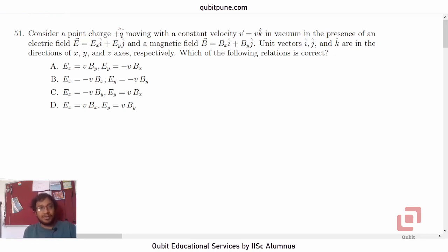Consider a point charge positive Q moving with a constant velocity v̄ = vk̂ in vacuum, in the presence of an electric field Ē = ExÎ + EyĴ and a magnetic field B̄ = BxÎ + ByĴ. Unit vectors i, j, k are in the directions of x, y, and z axes respectively. Which of the following relations is correct? We have to relate the components of electric field with those of magnetic field and speed v.